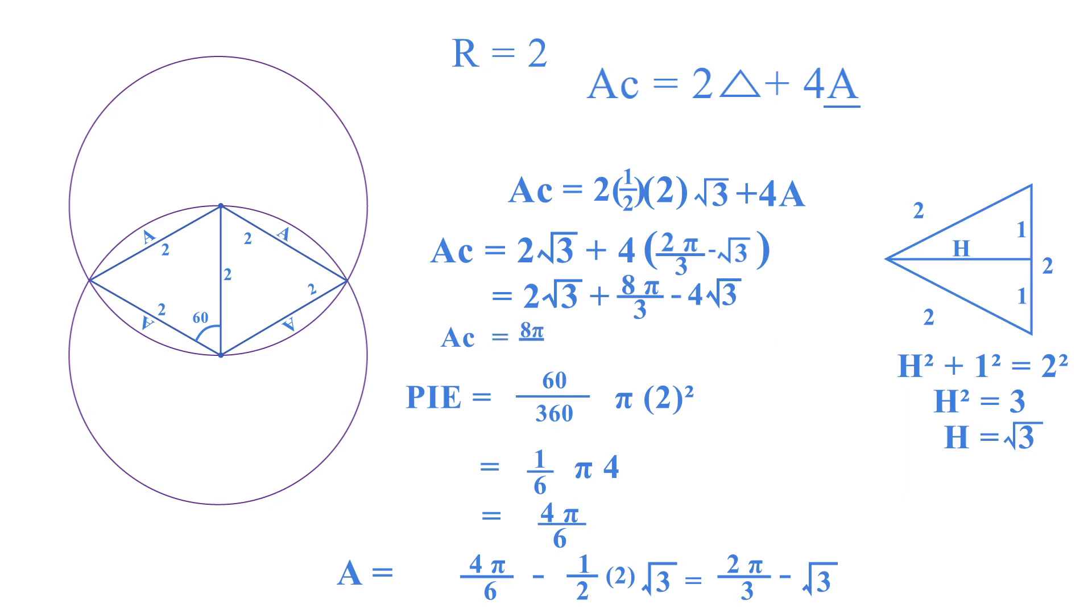And this becomes 8π/3 minus 2√3. This is the area of the common region.